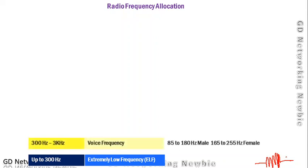The next category is Voice Frequency. The frequency range for this category is 300 hertz to 3 kilohertz. Frequencies starting from 300 Hz up to 3 kHz are known as Voice Frequencies.